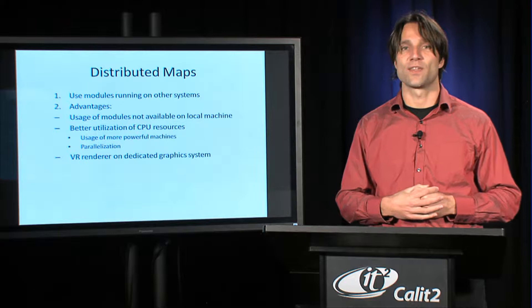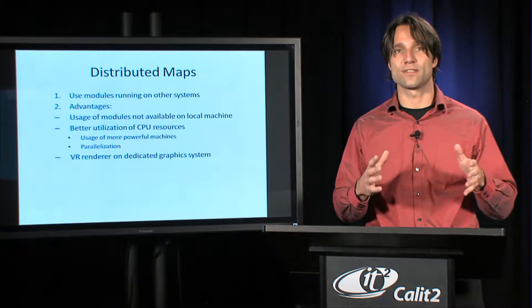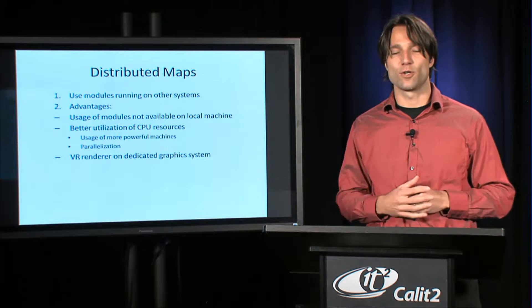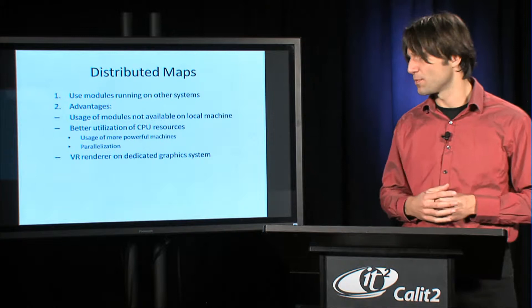There are really two levels of collaboration that we can do in Covice. One is collaborative maps where some of the modules are run on different systems. And then in OpenCover we can run applications collaboratively where we have separate OpenCover instances running in various places in the world, or maybe even in the same lab but not in the same system.